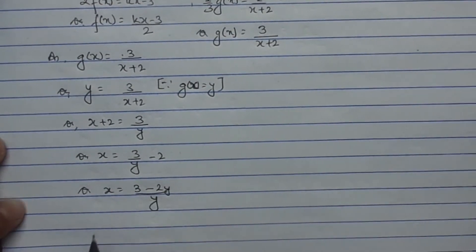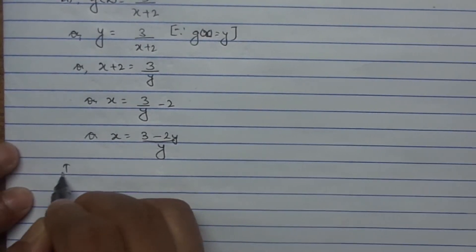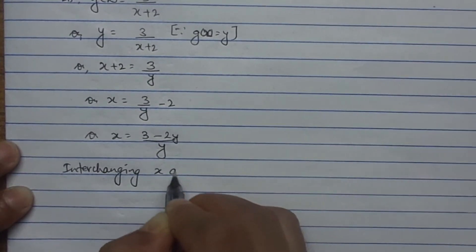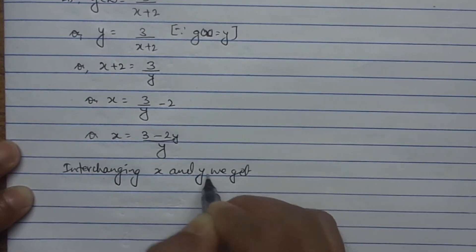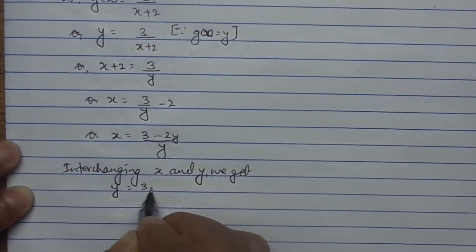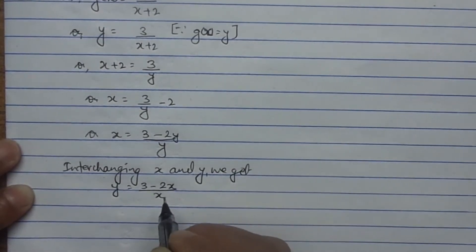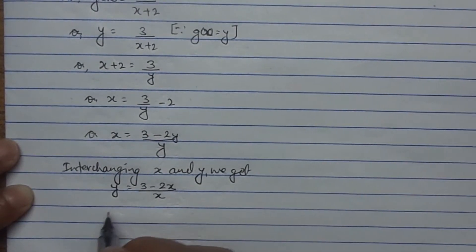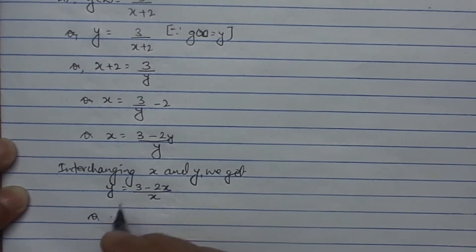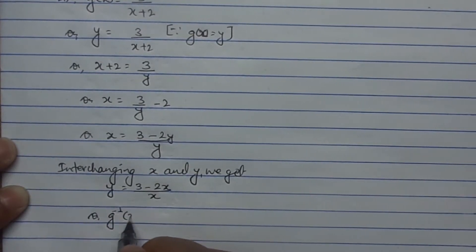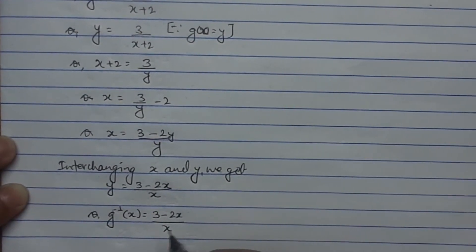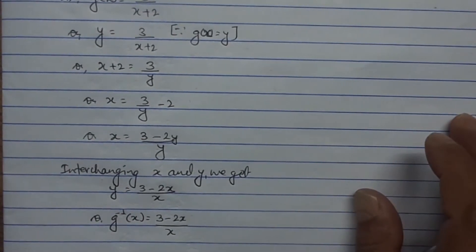Now in order to find g⁻¹, we need to interchange the values of x and y. Interchanging x and y gives y equals (3 minus 2x) divided by x. The value of y obtained by interchanging x and y is g⁻¹(x). Therefore, g⁻¹(x) equals (3 minus 2x) divided by x.